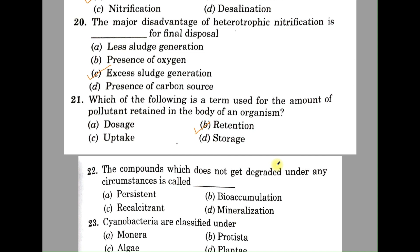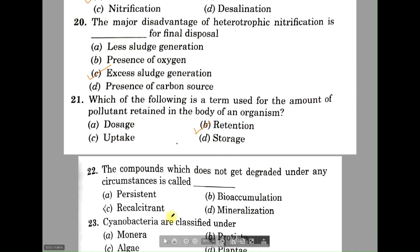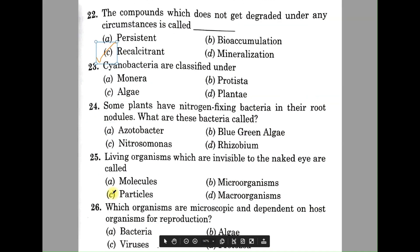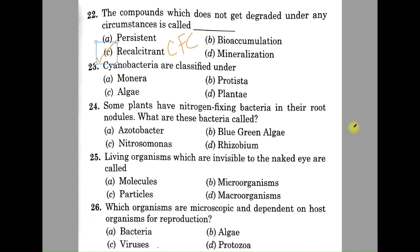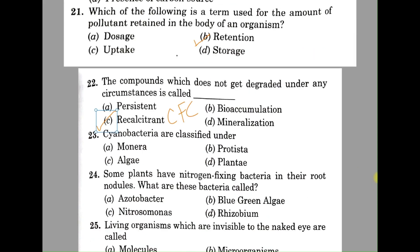Question number twenty-two: compounds which do not get degraded under any circumstances are called — A: persistent, B: bioaccumulation, C: recalcitrant, D: mineralization. The correct answer is C, recalcitrant. Examples of recalcitrant molecules include CFCs, chlorofluorocarbons.